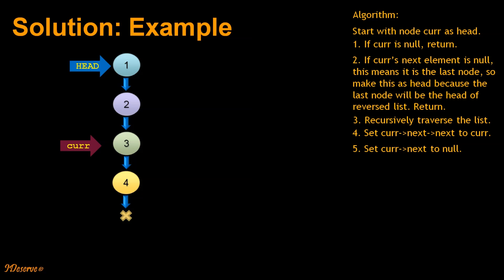We come to node 3 and current is pointing to node 3. Current is not null, current.next is not null. We go to the next step. So current is now pointing to node 4. Current is not null, but now current.next is null. So we make current as head and then we return.